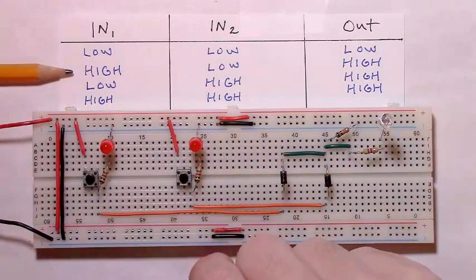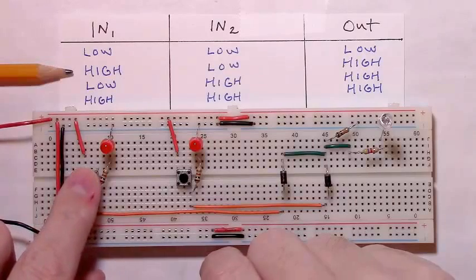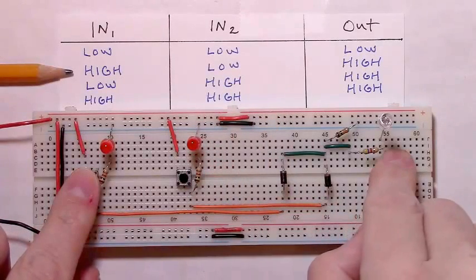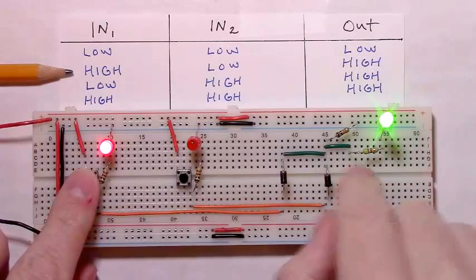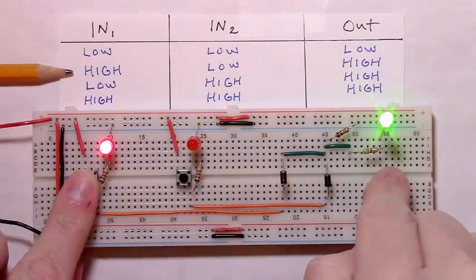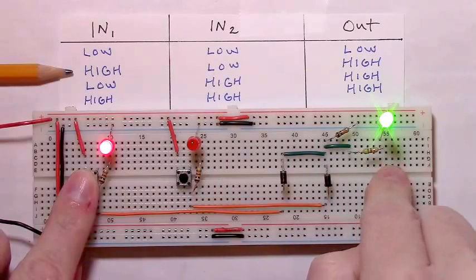The next row in the truth table is whenever input 1 is high and input 2 is low, then the output should be high. And in fact, that's what we get. Input 1 is high, input 2 is low, the output LED is on in a high state.